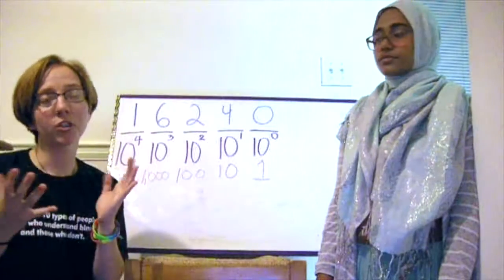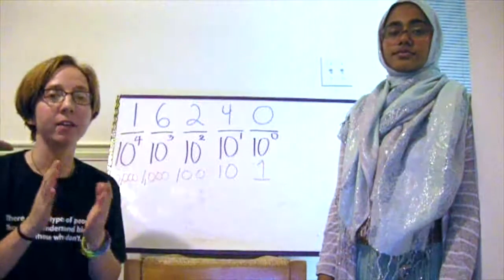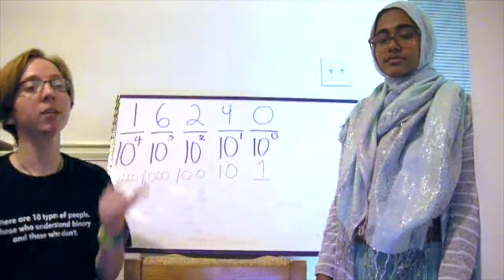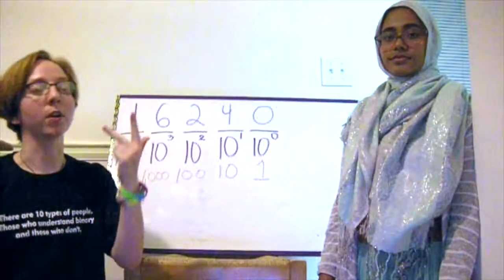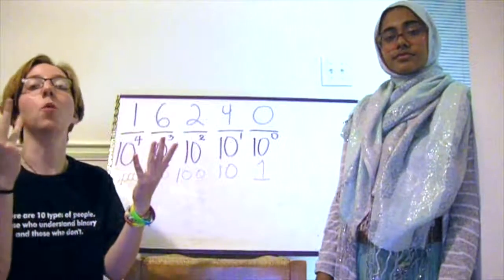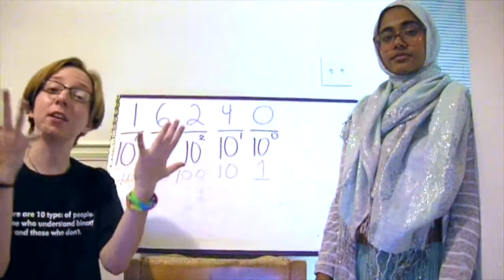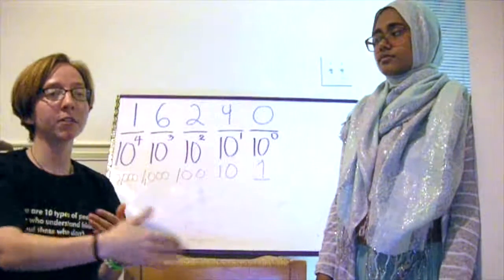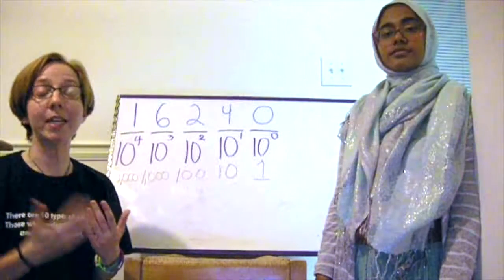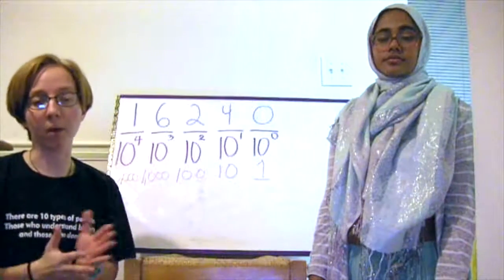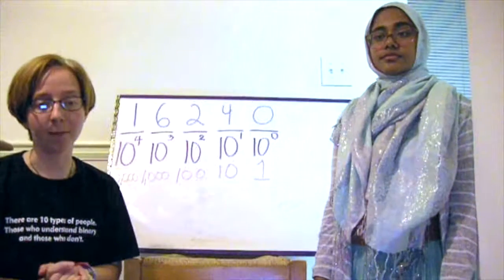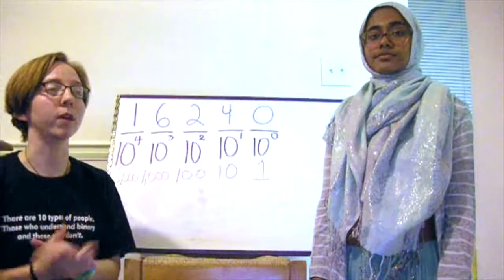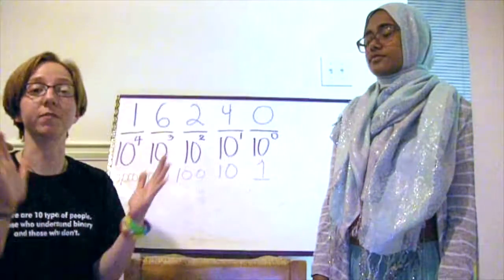When we count, we do it in groups of 10. For example, if we start at 20, we have 20, 21, 22, 23, all the way up to 29, giving us 10 numbers, and then we switch to 30. Every 10 numbers, we change the leading digit in whatever number we are talking about. And this is what base 10 does — it's what it means. We count things in groups of 10.